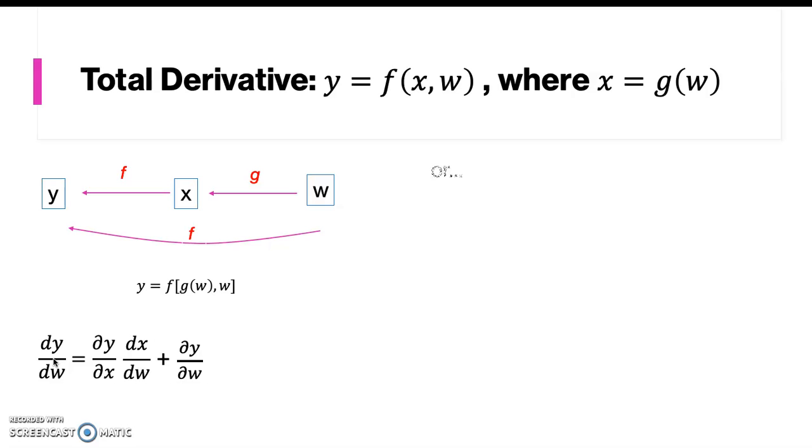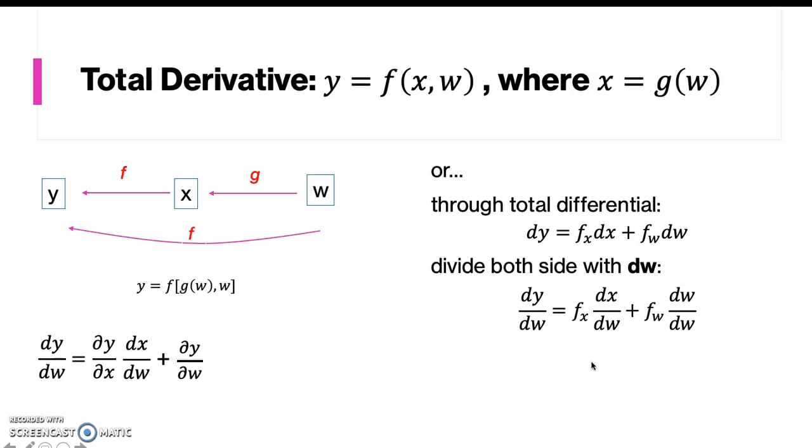But we can also obtain it by differentiating the function totally, or conducting a total differential. Through this, this is a total differential: dy equals fx dx plus fw dw. And we divide both sides by dw and obtain this form. And since this is a partial derivative, it is actually ∂y/∂x, and this is ∂y/∂w.